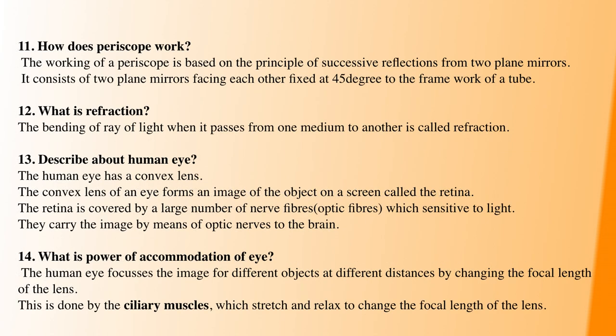Next question: what is a periscope? A periscope is an instrument based on reflections of light. Its working principle is two successive reflections from two plane mirrors. The mirrors are placed at a 45-degree angle. This is how a periscope works.